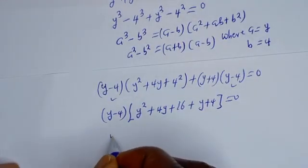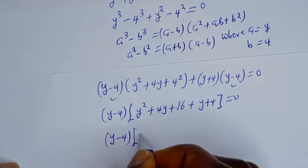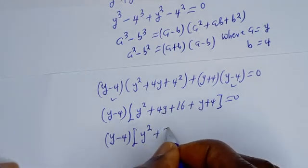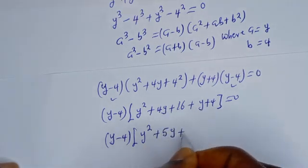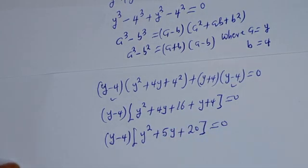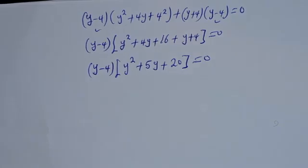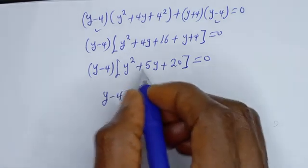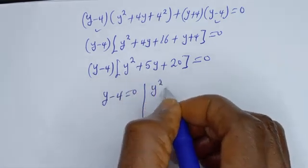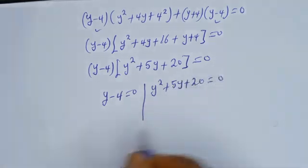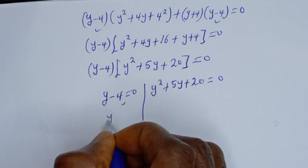Then this is (Y − 4)(Y squared plus 4Y plus Y plus 16 plus 4), that is (Y − 4)(Y squared plus 5Y plus 20) equal to 0. There are two cases: the first case is Y − 4 equals 0, and the second case is Y squared plus 5Y plus 20 equals 0. From the first case, Y is equal to 4.